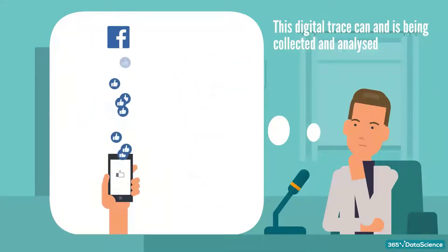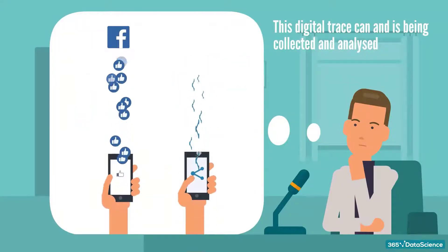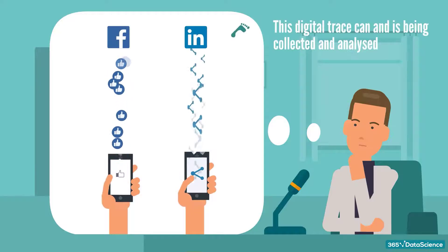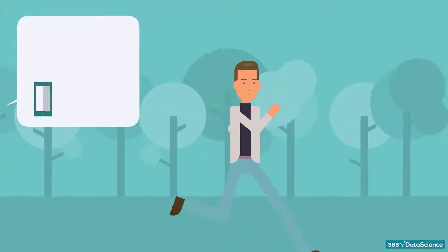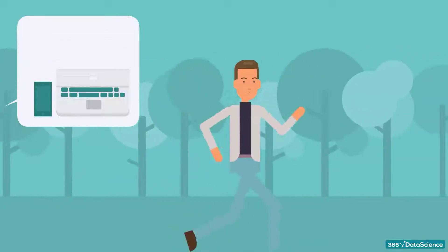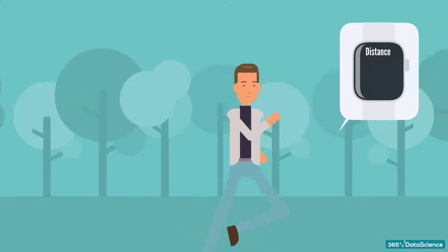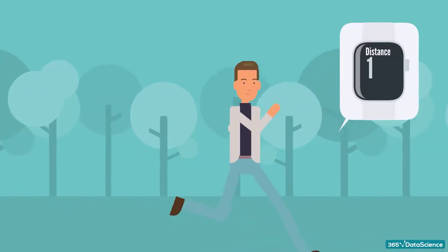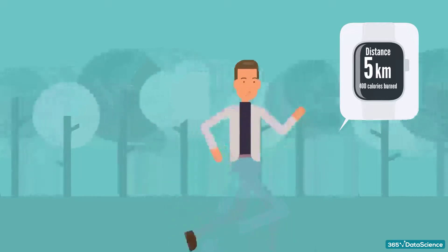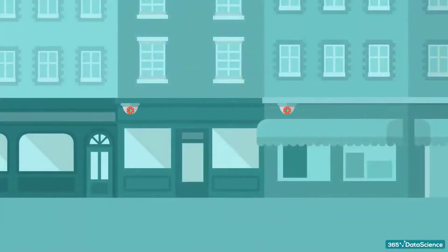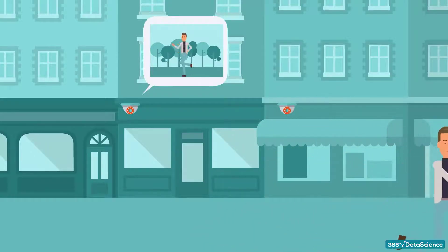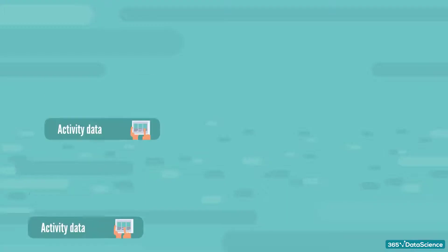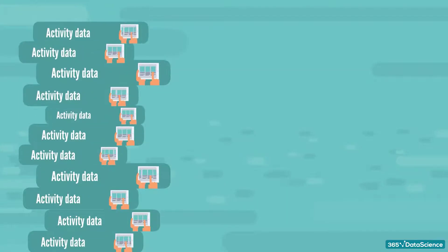Everything I like on Facebook or share on LinkedIn or Twitter creates a data trail. Even if I choose to switch off my phone and laptop and go for a run, my smartwatch tracks my movement, how far I run, how many calories I burned. Local CCTV cameras would also pick up images along my favorite route. So yes, all of us generate tons of activity data on a daily basis.